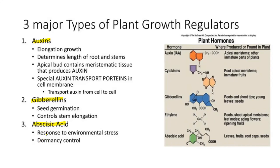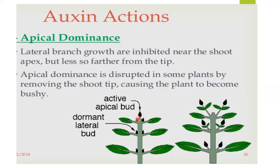Auxin's role is in elongation growth, and it determines the length of the roots and stem. The apical bud contains meristematic tissue that produces auxin. As shown in the diagram, auxin is produced at the apex of the shoot or root and then travels down to wherever it is needed. There are special auxin transport proteins in the cell membranes to facilitate this transport from cell to cell.